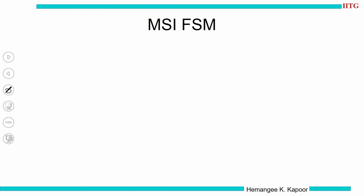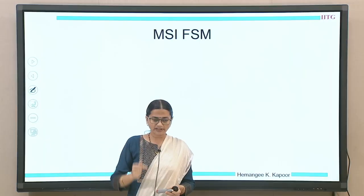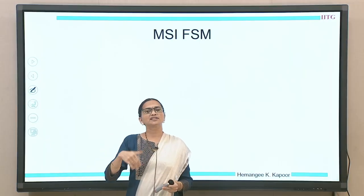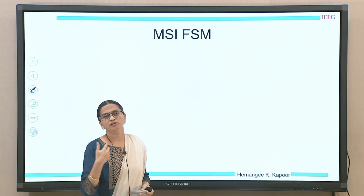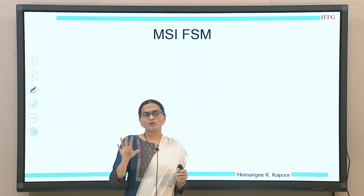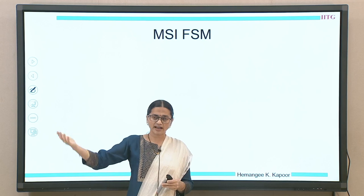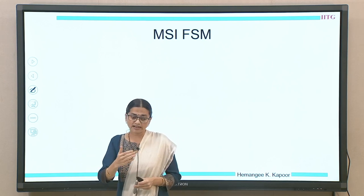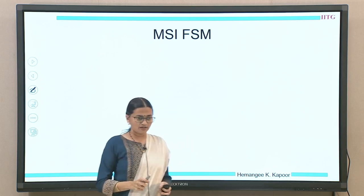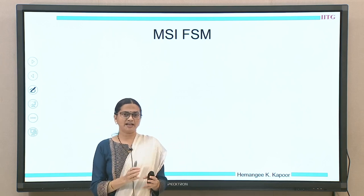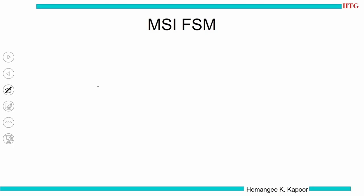Now we discuss the MSI FSM. We draw the states: I (block absent), S (shared), and M (modified). For interactions with the processor — drawn in blue — and bus snooping interactions — drawn in red. From state I, if the processor sends a read, we do not have the block, so we send a bus read transaction. We get the data block and move to the shared state.